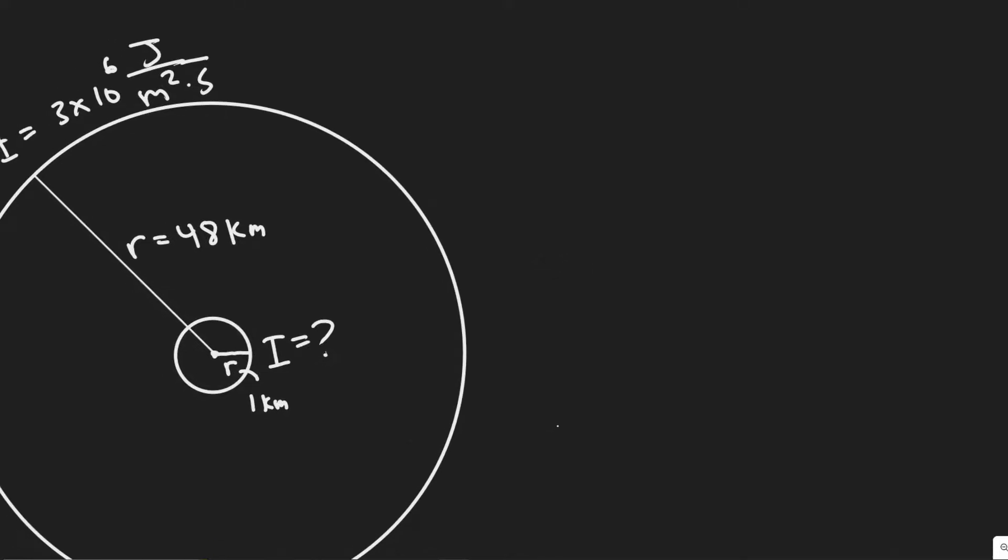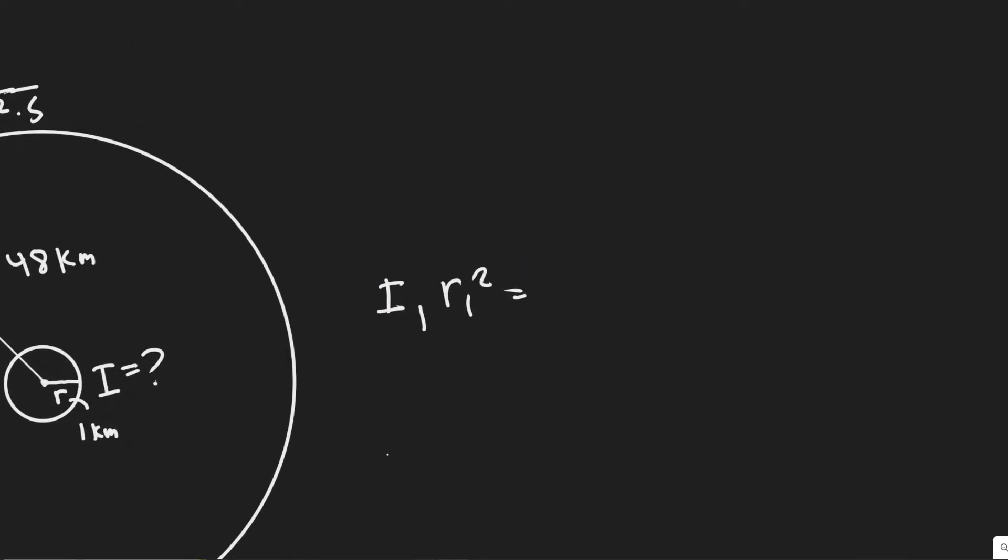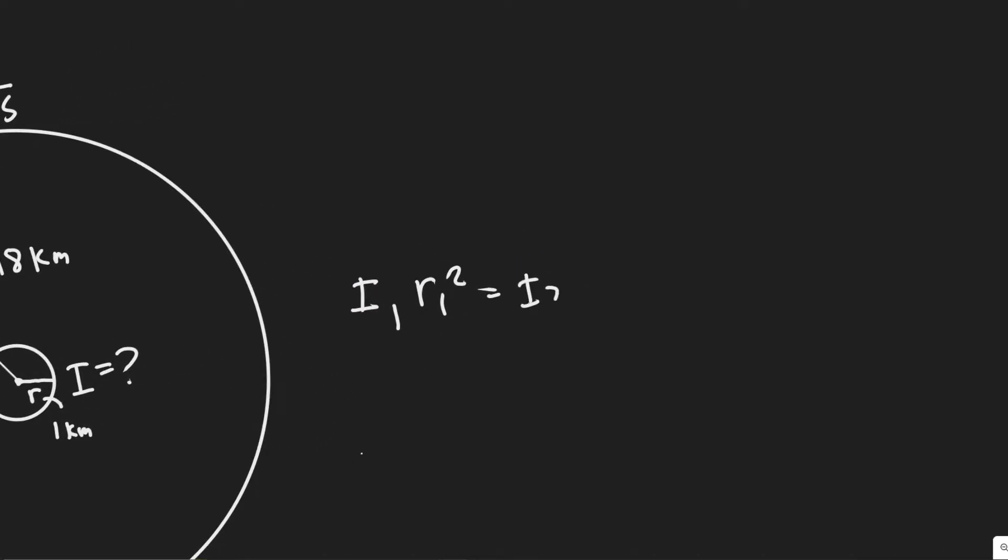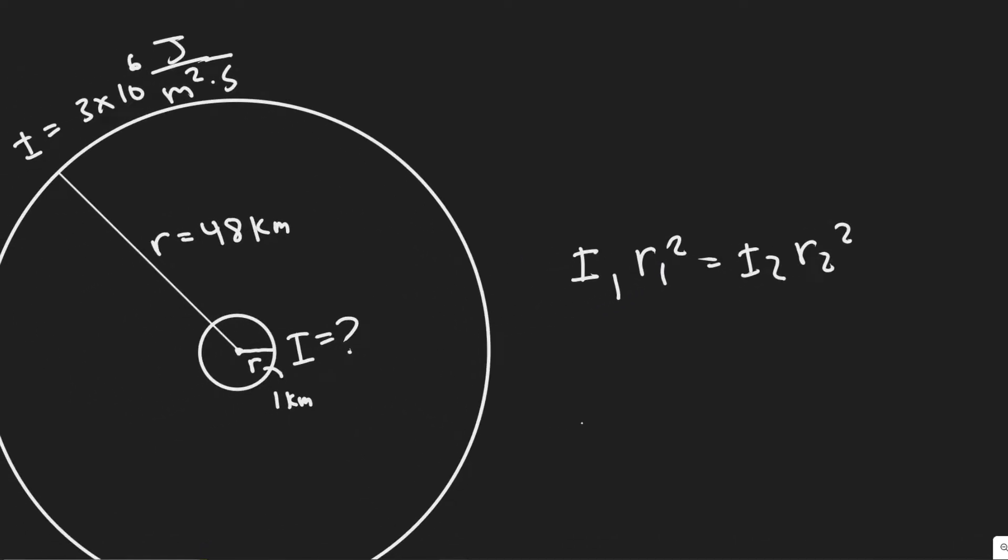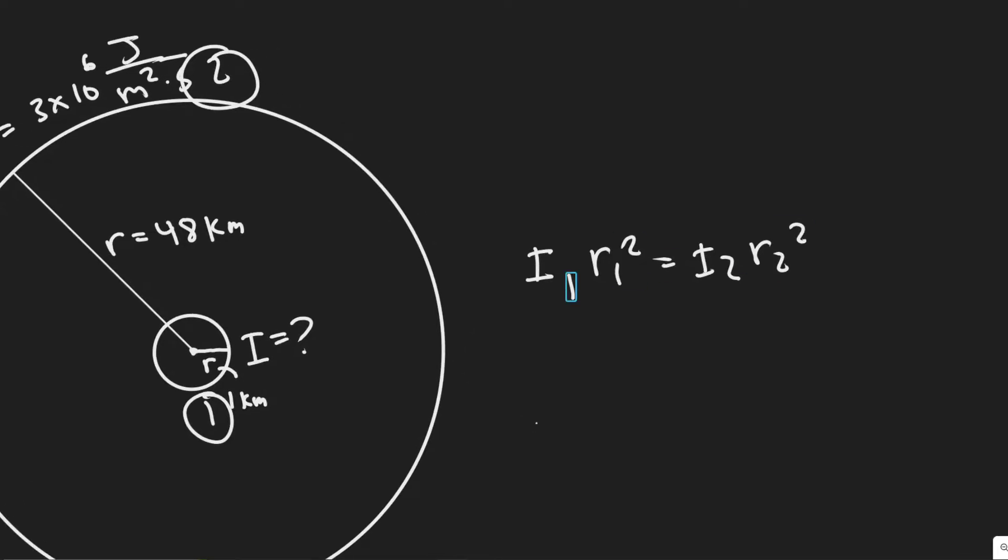So the way we're going to do it is by using this formula, which basically relates intensity and radius. So you need to know that the intensity times the radius at one point, so I'm just denoting it with 1 to represent point 1, and then equals I2 times R2 squared. So the 1 and 2 just represent points 1 and 2. So we could define point 1 to be at the 1 kilometer mark and point 2 to be at the 48 kilometer mark. And we know that these have to be equal.